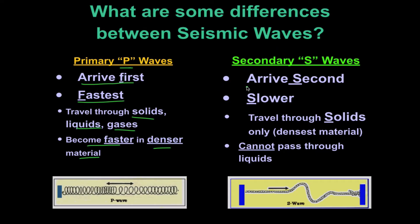Secondary waves arrive second. They are also slower. They only go through solids. So it's easy to remember secondary waves because of the S's. They cannot pass through liquids. They can only go through solids.